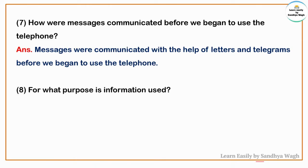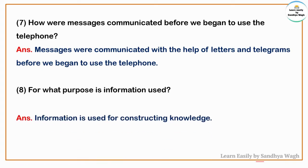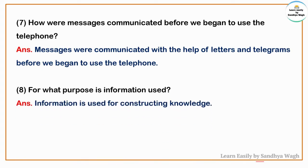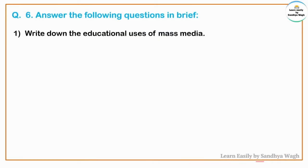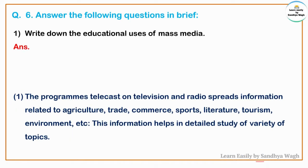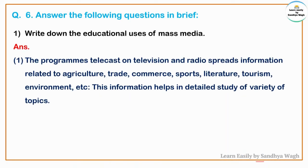For what purpose is information used? Information is used for constructing knowledge. Question 6: Answer the following questions in brief. Write down the educational uses of mass media. Answer: The programs telecast on television and radio spread information related to agriculture, trade, commerce, sports, literature, tourism, environment, etc.